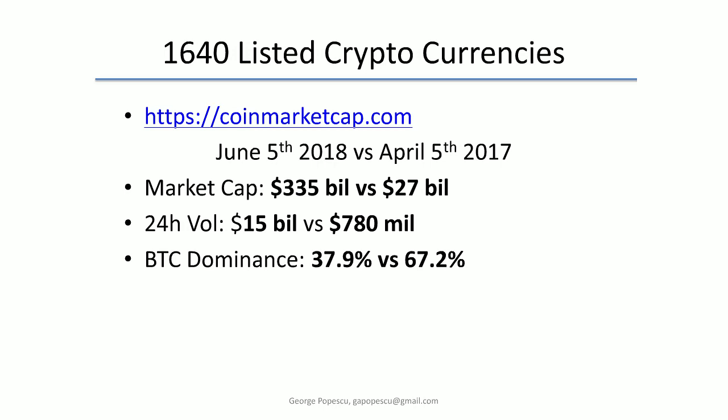CoinMarketCap.com is a website where you can see cryptocurrencies already trading on exchanges, ranked by market cap. Between April and June 2017, the whole market cap went from $27 billion to $335 billion, and daily volume went from about $780 million to $15 billion — though some of that volume may be wash trading. Most importantly, Bitcoin's market share went from 67% down to about 38%, showing growing diversity in the ecosystem.